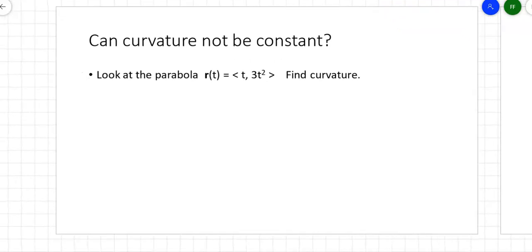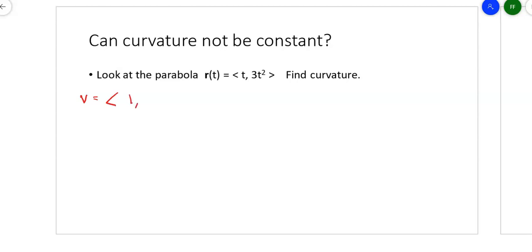Can curvature not be constant? So far we've looked at the same example twice and the curvature of that circle was constant. Now I've got a parabola: r(t) = (t, 3t²). Find the curvature. My velocity V is the derivative: (1, 6t, 0). Then the acceleration is (0, 6, 0).